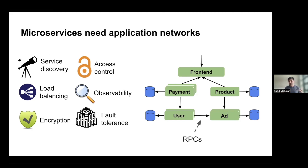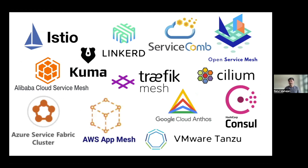This was a big need as microservices were taking form, and the market responded. There was a Cambrian explosion of things called service meshes. The simple way to think about service meshes is they let you build these application networks in software, providing features to RPCs between services around the areas I was talking about. And there are lots and lots of them out there.